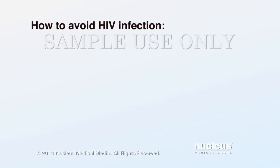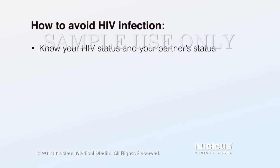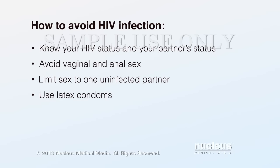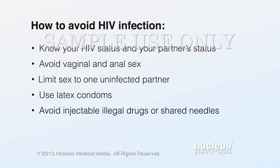To avoid getting or spreading an HIV infection, know your HIV status and your partner's status by getting tested regularly. The most effective way to prevent HIV infection is to avoid vaginal and anal sex. When engaging in sexual activity, you will be less likely to contract HIV if you only have sex with one uninfected partner or use latex condoms for protection. Avoid using injectable illegal drugs or sharing drug needles, because the needles may have the virus on them.